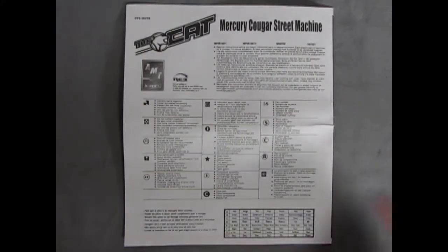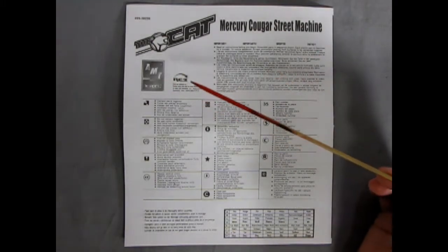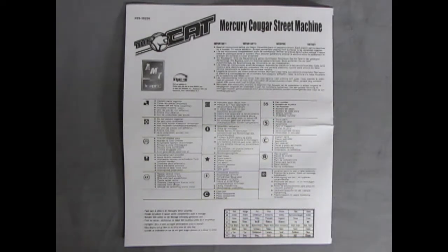Here we have the instruction sheet for our Mercury Cougar Street Machine. This one was by AMT Ertl under RC2 so it is from a little while ago. Here we have a paint chart down below to show all the colors that we need to build this kit.